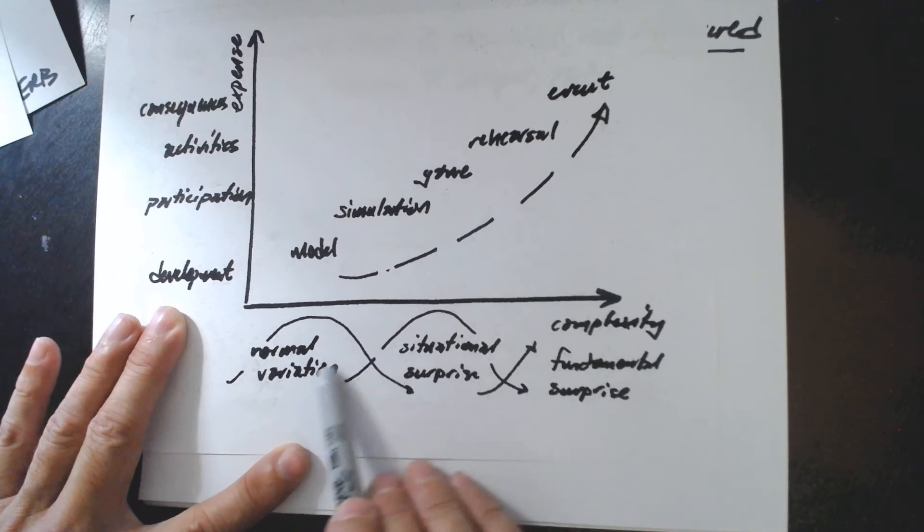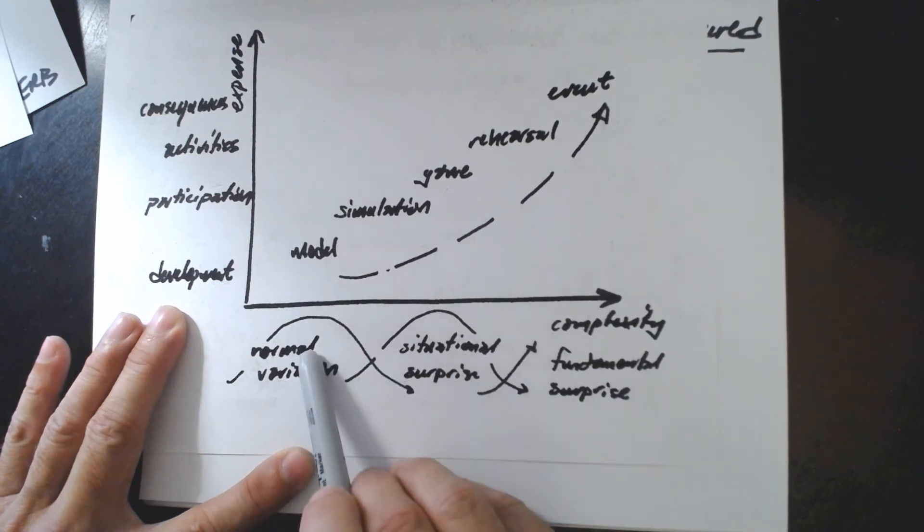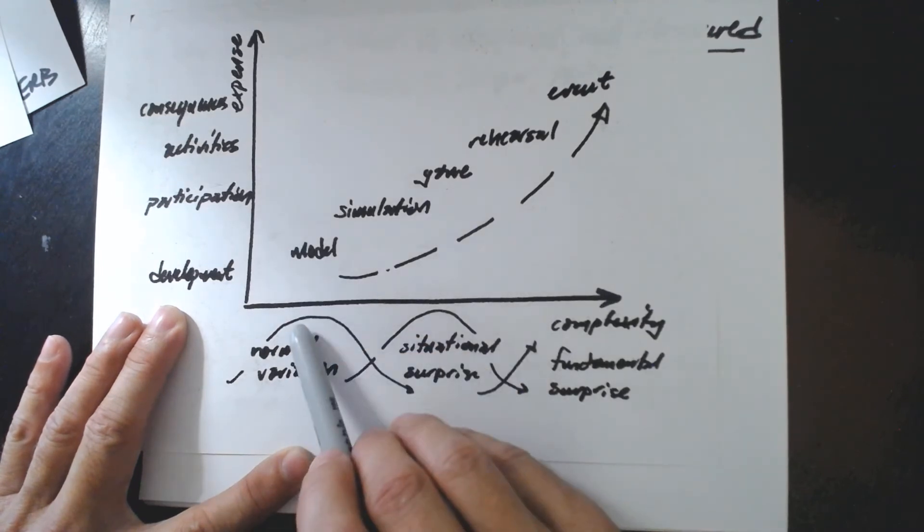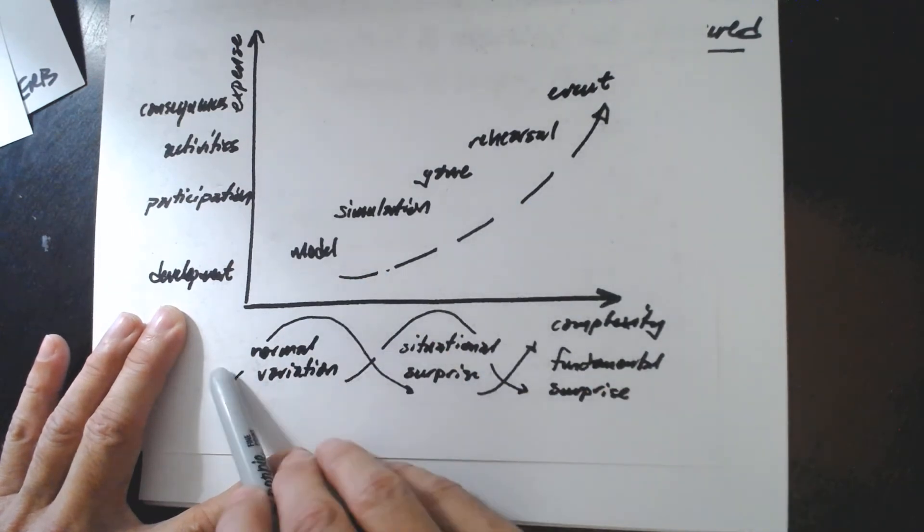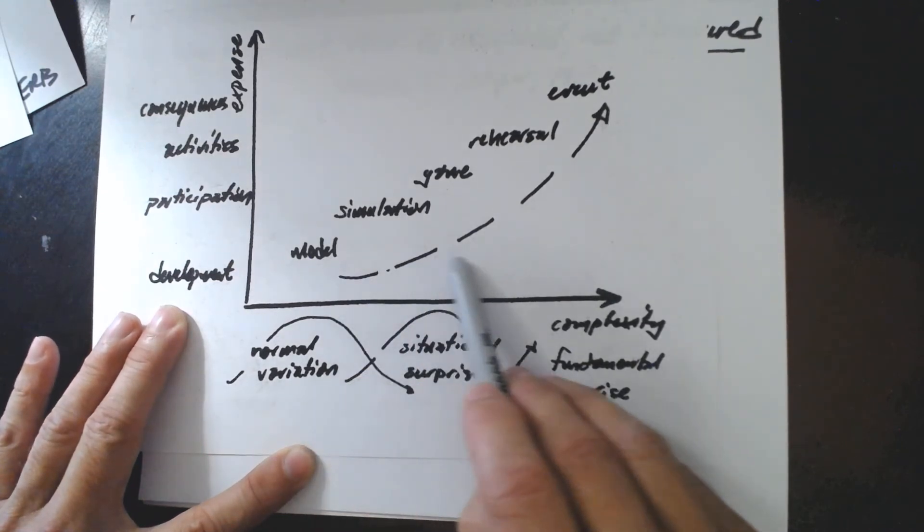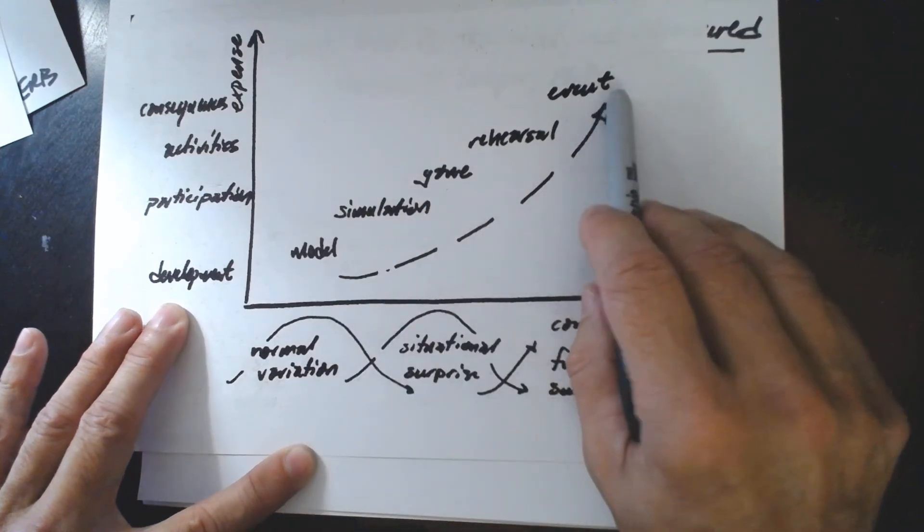In the model, we have what I would call normal variation. Consider a deck of cards. You're going to draw a card. There are only four suits. Hearts, spades, diamonds, clubs. It's uncertain, but it's not ambiguous. You know that you will draw one of these suits. You know there are 52 cards, maybe plus a joker in the deck. And the kind of uncertainty that you face is normal variation.